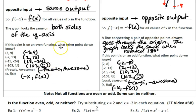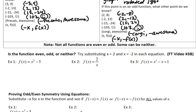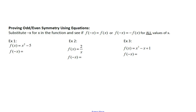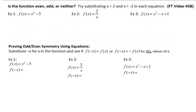We've just found out that if a function is an even function, we can put in opposite inputs and get the same output. If a function is an odd function, we can put in opposite inputs and get opposite outputs. Not all functions are even or odd — some can be neither. We're going to look at how we can tell if a function is odd, even, or neither by looking at specific values and by looking at the actual equation of the function.